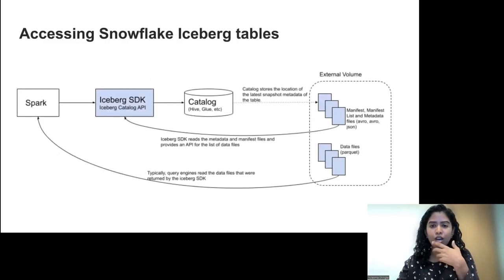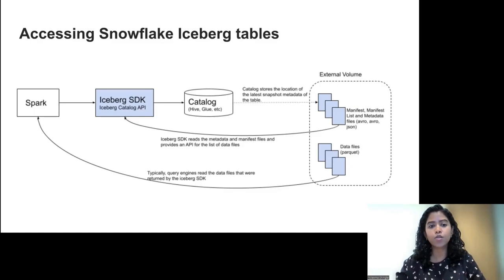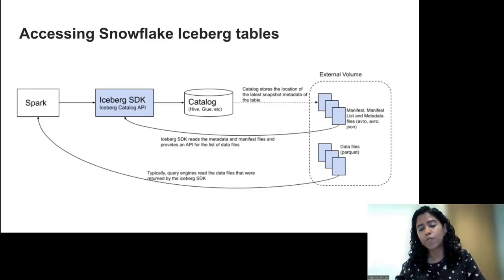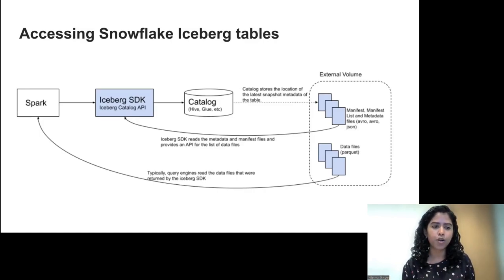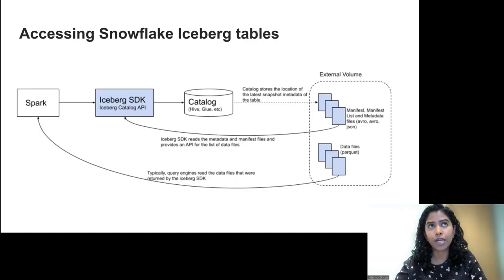Now you have an Iceberg table and all the Iceberg metadata — how would a Spark shop access it? Iceberg provides a convenient SDK used by almost all tools that support Iceberg tables. Spark loads the Iceberg SDK and says: from the Snowflake catalog, I want to read the orders table. The SDK looks up the catalog for the root metadata file location, pulls it out, spins up the table metadata in memory, and sends it back to Spark. Spark can now query that table — the exact same data files Snowflake created — so there are no two copies of the data.